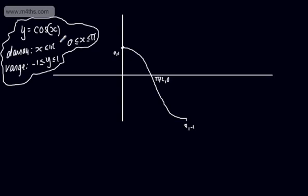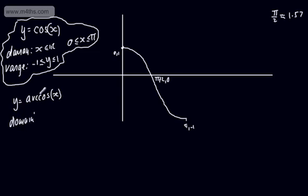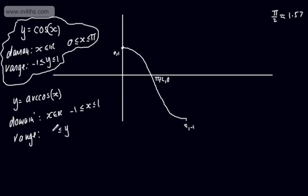Getting your head around pi and pi by 2 gives some idea of how to plot this — pi by 2 is roughly 1.57. For y equals arccos x, we switch the domain and range. The domain of the inverse is the range of the original, so x is a real number between minus 1 and positive 1. The range is y between 0 and pi.